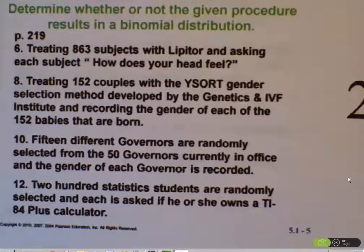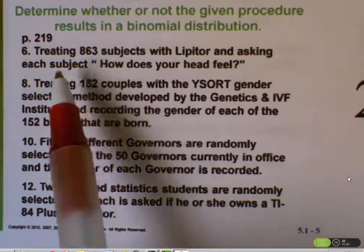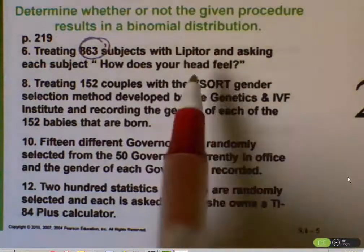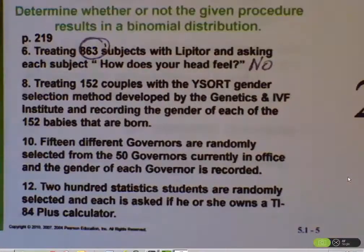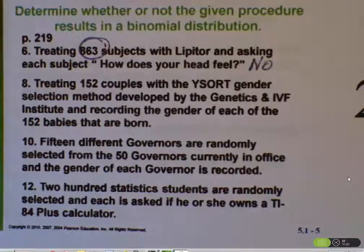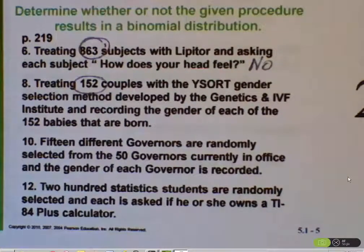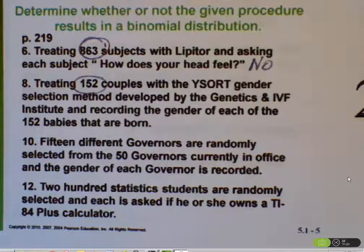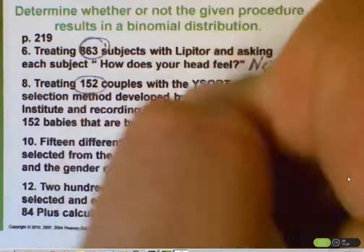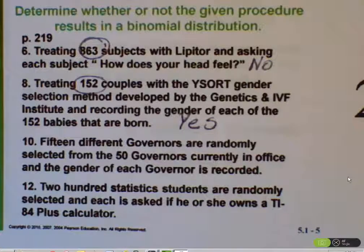Treating 863 subjects with Lipitor and asking each subject how their head feels — we have a fixed number of trials, but there's more than two possible outcomes to that question, so it's not a binomial probability distribution. Number 8: treating 152 couples with the Y-SORT gender selection method and recording the gender of each of the 152 babies born. There's a fixed number of trials, the gender of the first baby in no way affects the gender of the second, the probability of a girl or boy remains the same for all 152 births, and there are only two possible outcomes — male and female. So that is a binomial probability distribution.